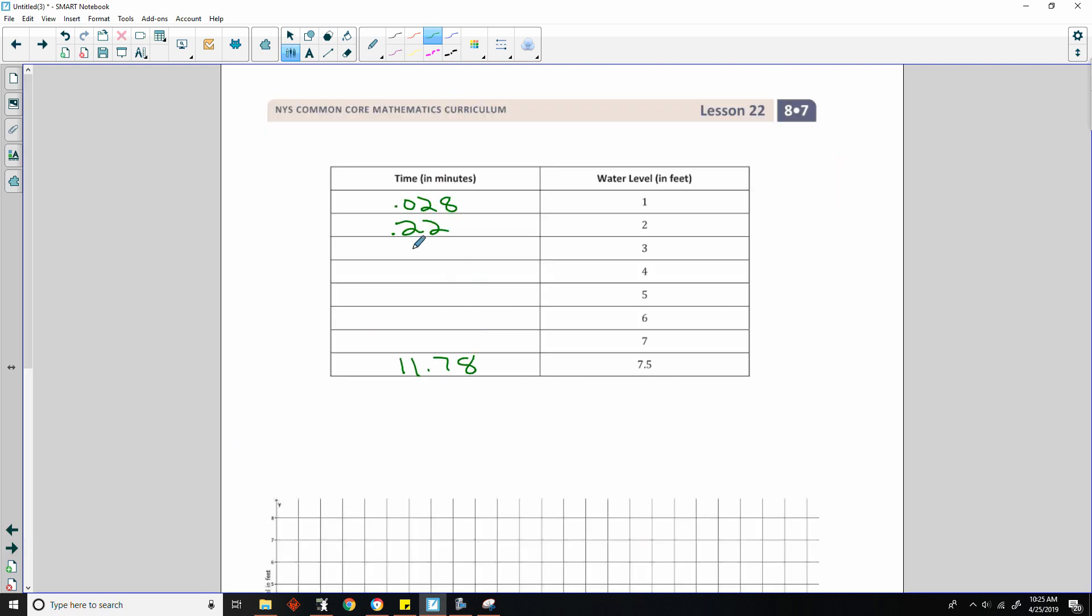But here's what you should have gotten. So it should be .75, 1.78, 3.49 for 5, 6 is 6.03, and then 9.57. So there's the table filled if you followed all those steps.